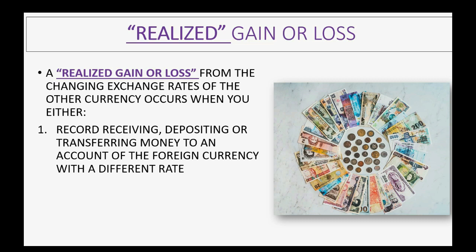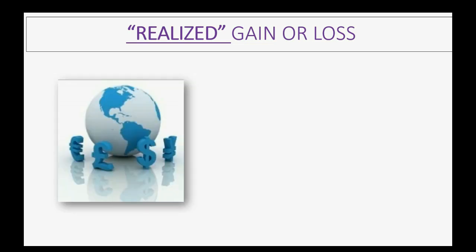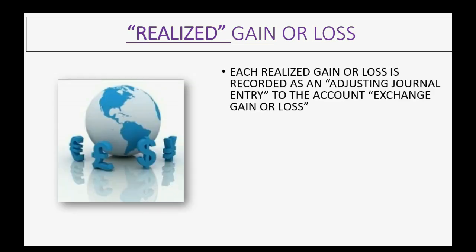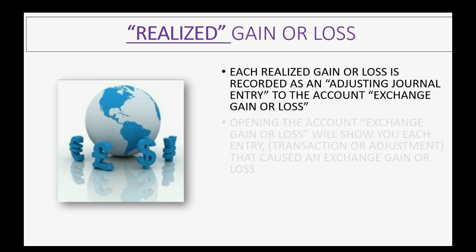A realized gain or loss occurs with a different rate from the rate that you actually acquired the currency from. A realized gain could also be recorded in your records from making a home currency adjustment. Each realized gain or loss is recorded as an adjusting journal entry to the account called Exchange Gain or Loss.